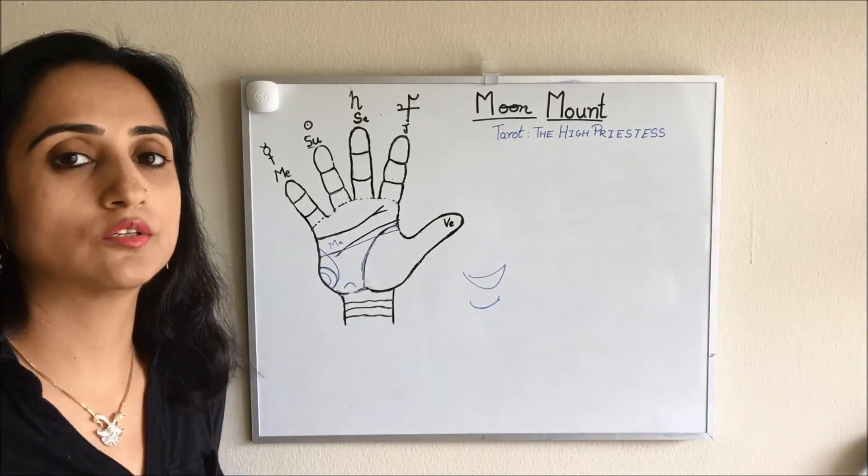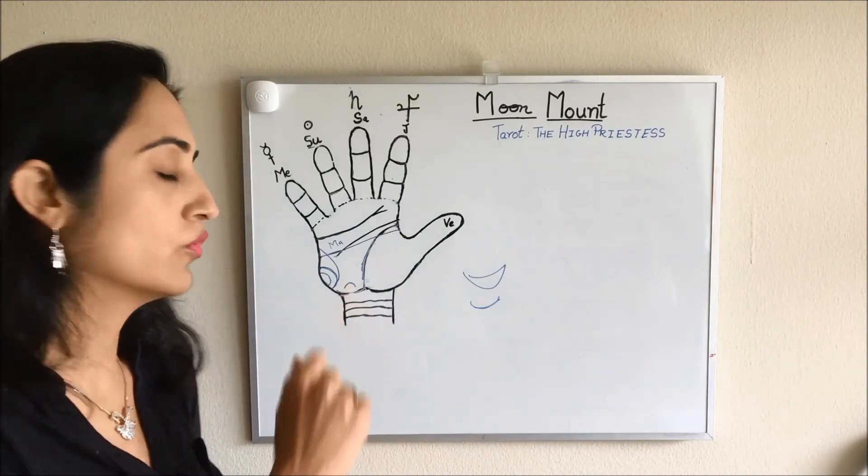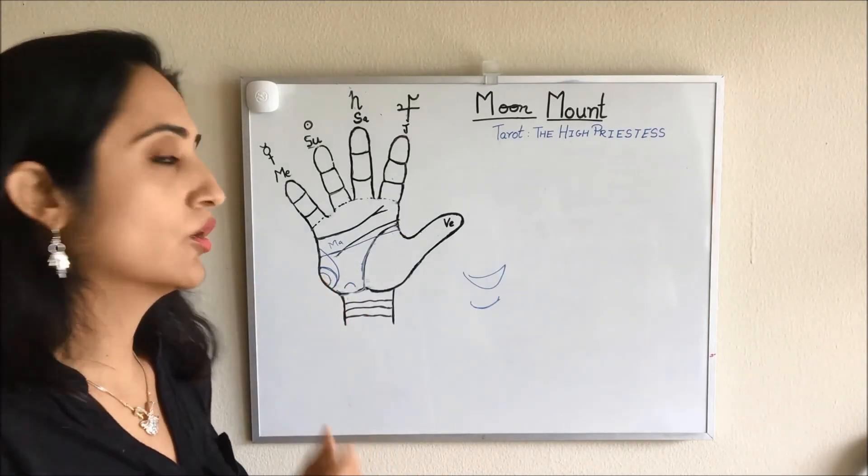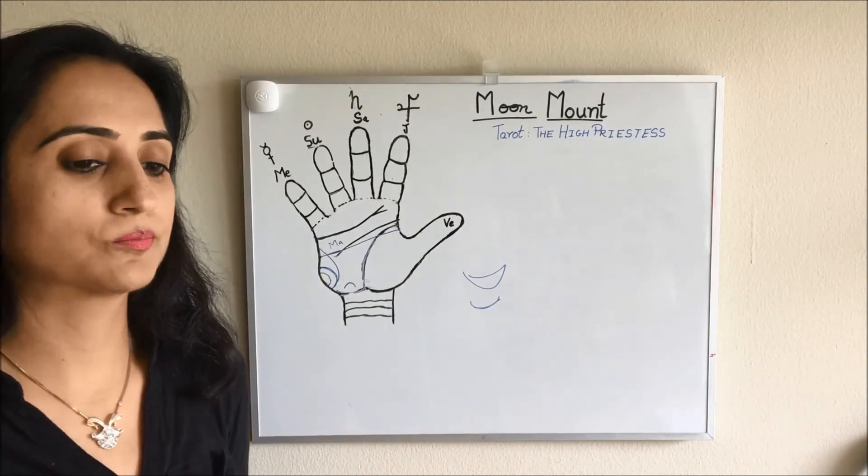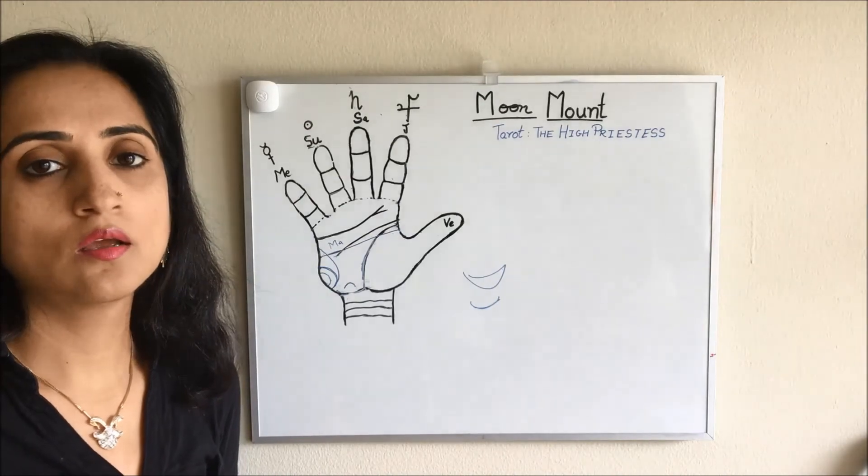So today we have understood about the ring of moon. That's all for today. In our coming video we'll understand what will happen when various signs are present on our moon mount.